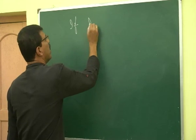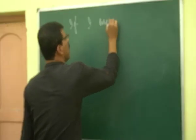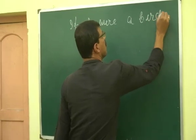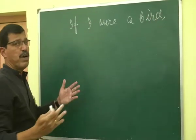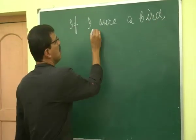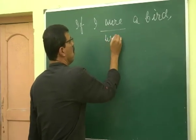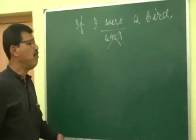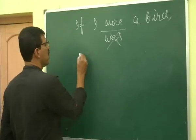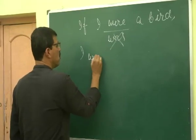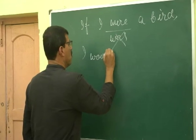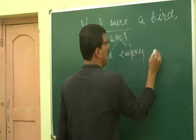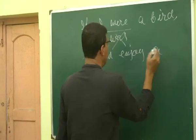If I were a bird — note that 'was' is incorrect here, it must be 'were' — if I were a bird, I would enjoy a borderless life. Past subjunctive always indicates an imaginary or a hypothetical situation.